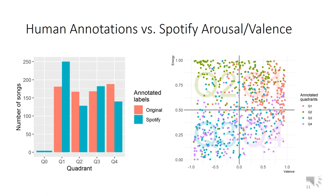As for the results, when comparing the songs labeled by humans to the energy and valence estimated by Spotify, we see some bias towards the first positive quadrant, visible in the Q1 red versus blue bar on the left and also on the scatterplot on the right. Also when the song energy is low, Spotify estimates more of the calm songs as actually being sad, and this can be seen in the scatterplot with several purple points — songs placed in the third quadrant, Q3.